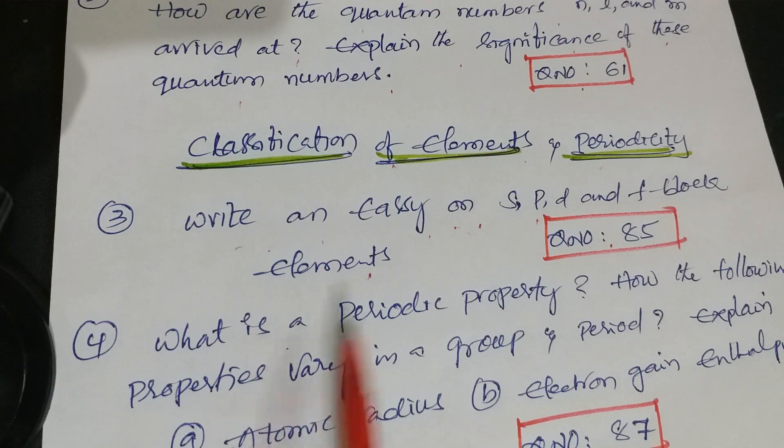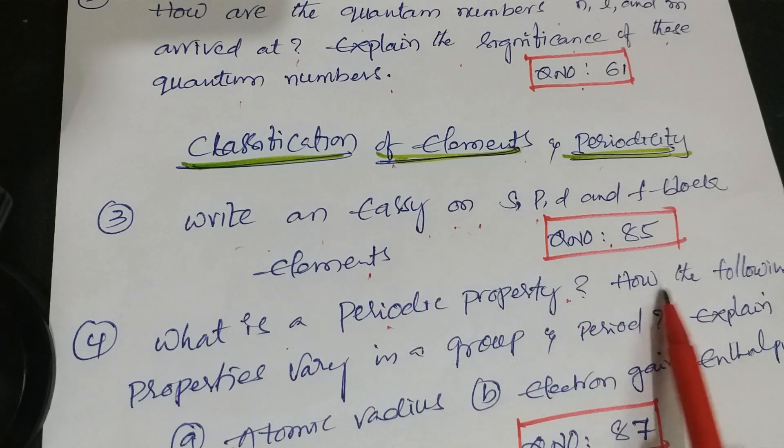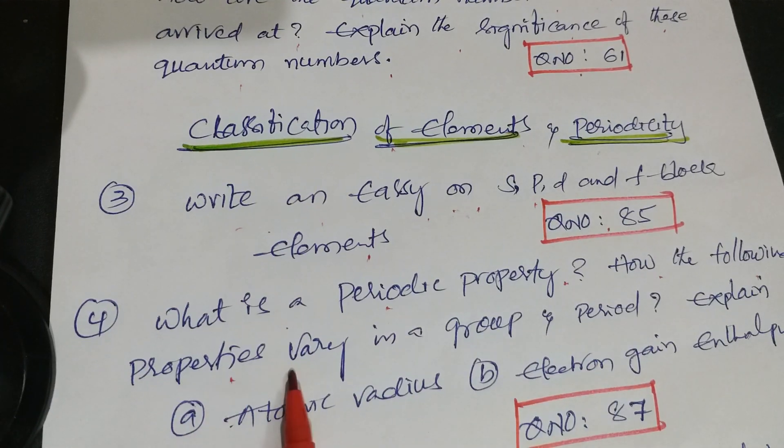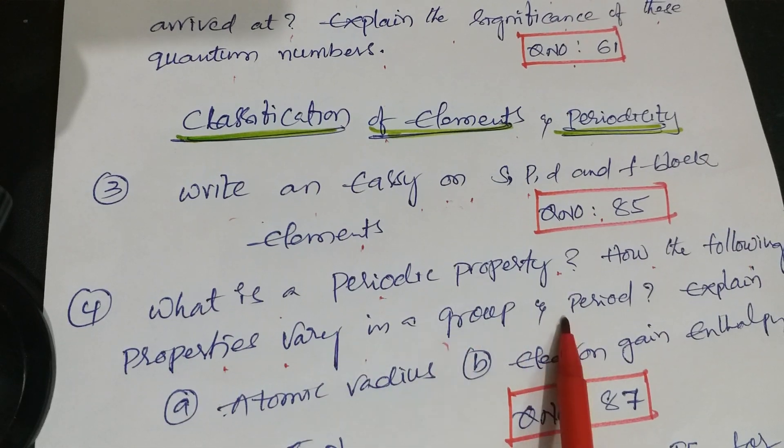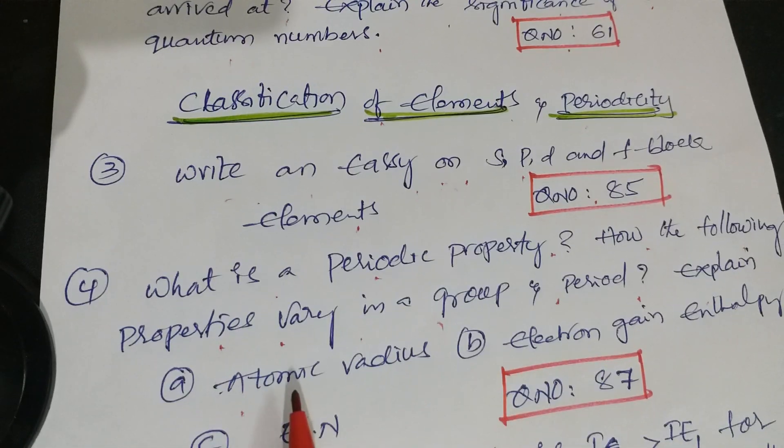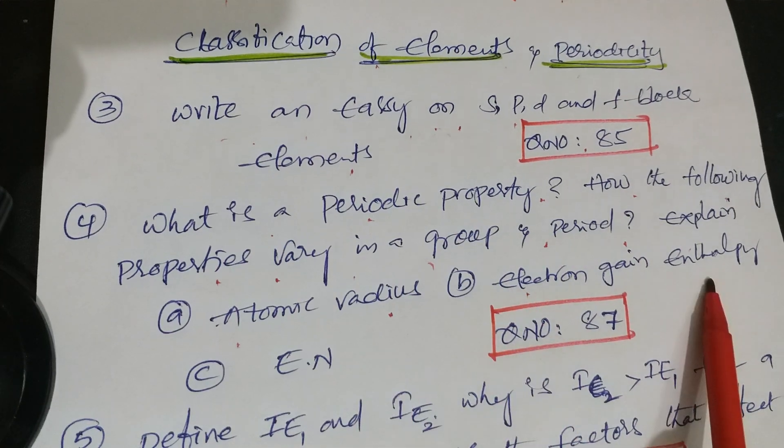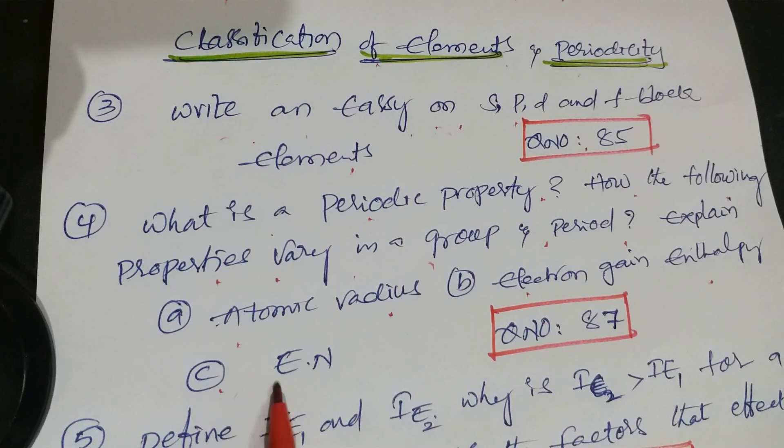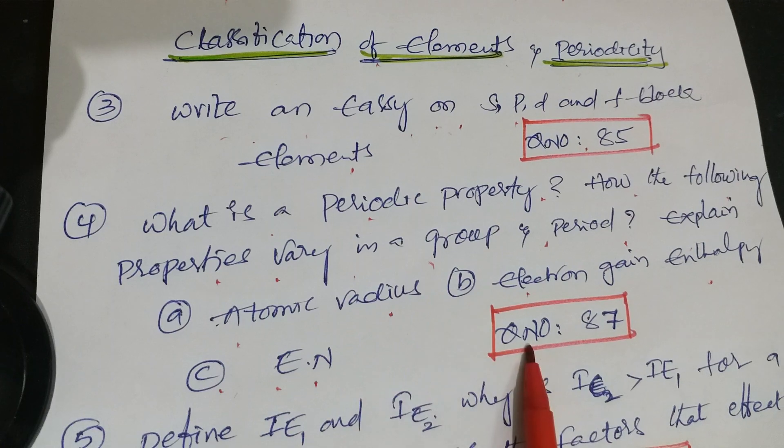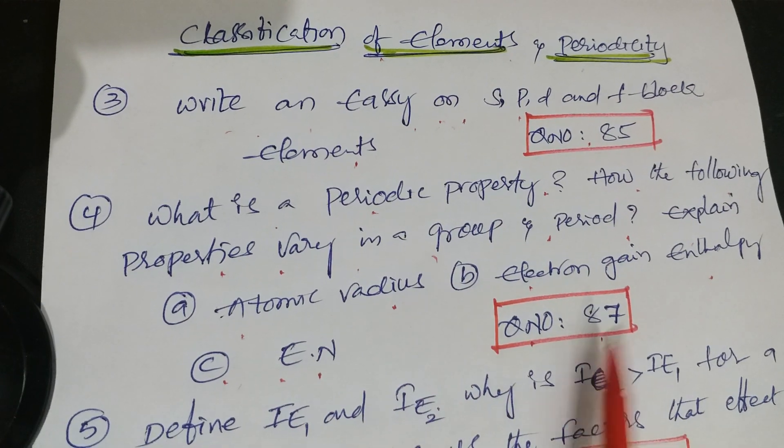Next question is: What is a periodic property? How do the following properties vary in groups and periods? Explain first, atomic radius; second, electron gain enthalpy; and third, electronegativity. That is question number 87 from Telangana Academy textbook.